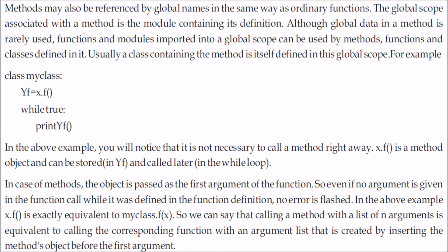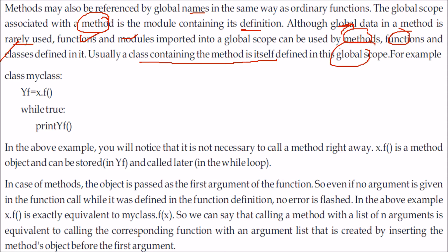Methods may also be referenced by a global name just like any ordinary function. The global scope associated with a function or method is the module containing its definition. Global data in a method is rarely used. Functions and modules imported into the global scope can be used by methods. Also, the class containing the method is itself defined in the global scope. It is not necessary to call the method right away — for example, `xf = x.f` stores the method object in xf, which can be called later.